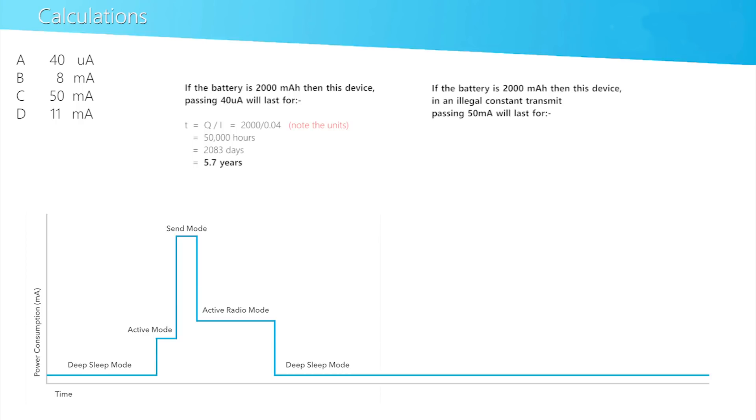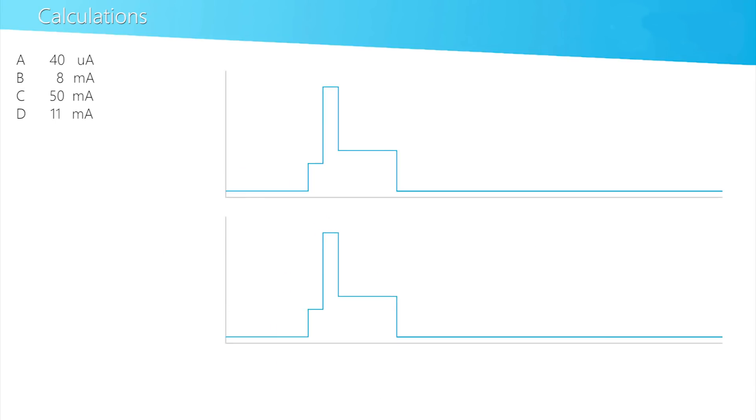If the device were to transmit continuously and illegally, the time taken to exhaust the battery would be 40 hours. This displays how extreme the lifetime values can be, but they are quoted to make another point.